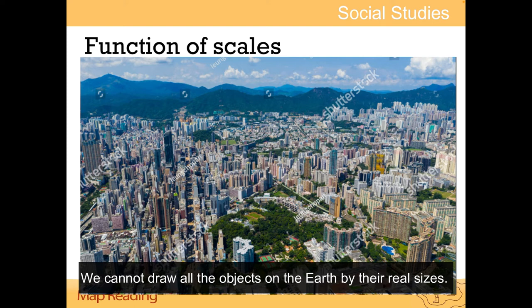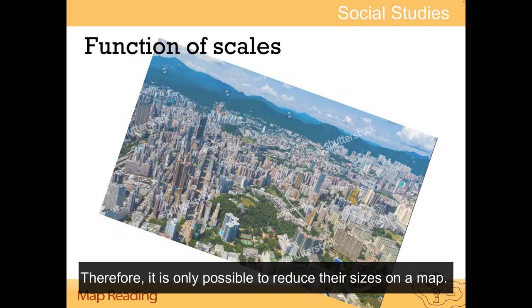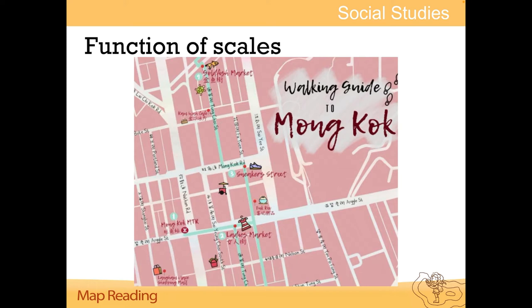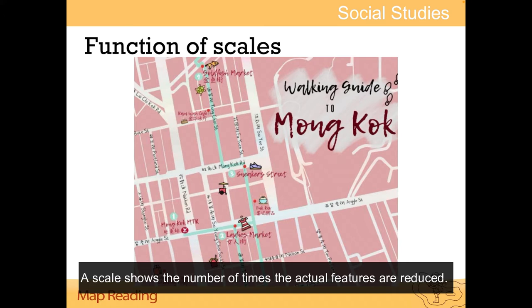We cannot draw all the objects on the Earth by their real sizes. Therefore, it is only possible to reduce their sizes on a map. A scale shows the number of times the actual features are reduced.